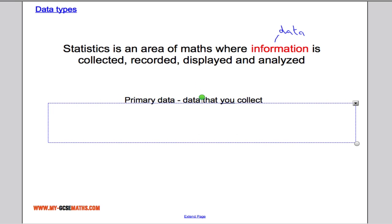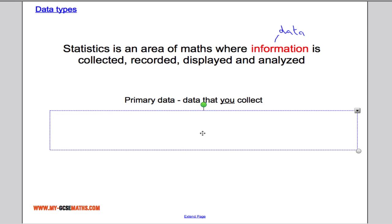So for example, if you went out and did a survey and asked people questions and collected the information that way, that will be considered primary data because you have physically collected it. But information or data that you get from books or the internet and other sources is what we call secondary data.